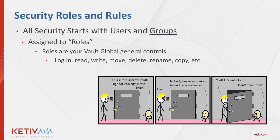Here we're really going to talk about security roles and rules. When I say role — and this is a big part for anybody that has Vault Basic — when I talk about roles, you have a role to access Vault. It's like the little comic there: this guy with the yellow hair got into the building, so he had a role that allows him access into the building. Once he's in the building, his role just says you can get into the building, you can open doors. That's a general overall role.